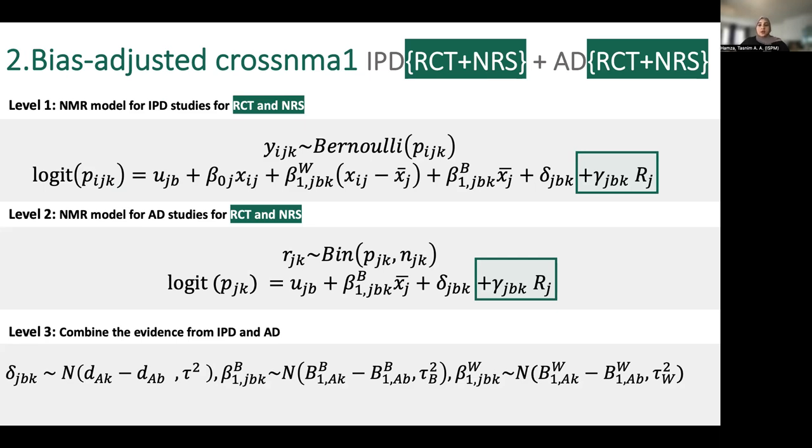And this brings me to our second model, which adjusts the relative treatment effects to the bias on each study. For individual model and aggregate model, we add this highlighted part, the bias effect of each study gamma multiplied by the bias indicator of that study R.